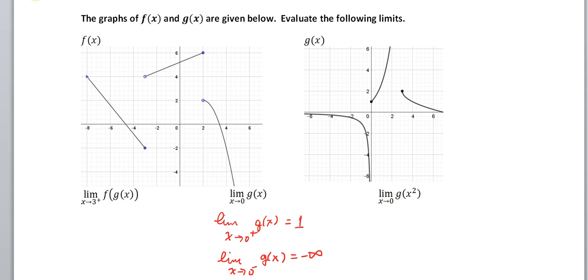Because the values are different, we can say that the limit here of g of x as x approaches 0 does not exist. So that was pretty straightforward. Now let's look at an example that may not be as straightforward.